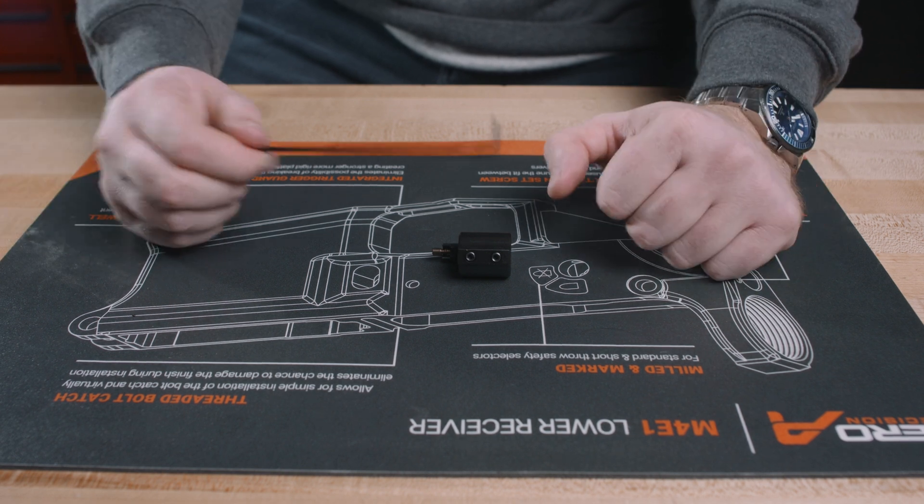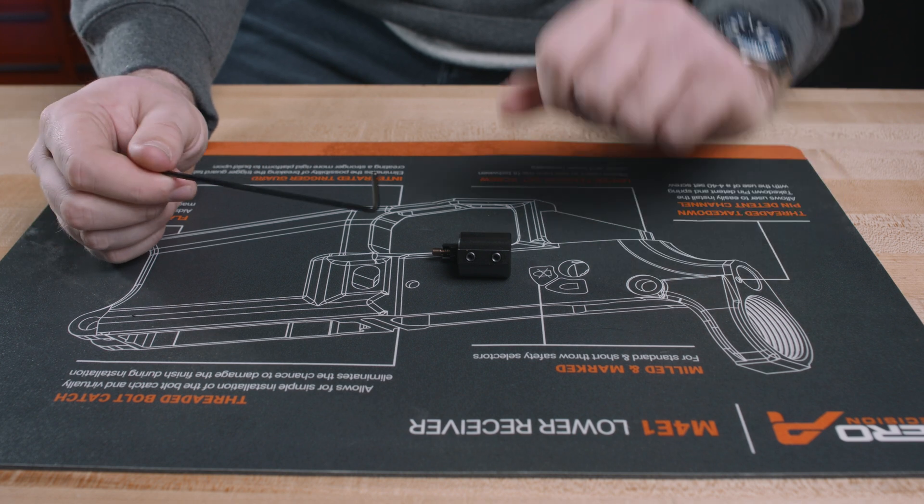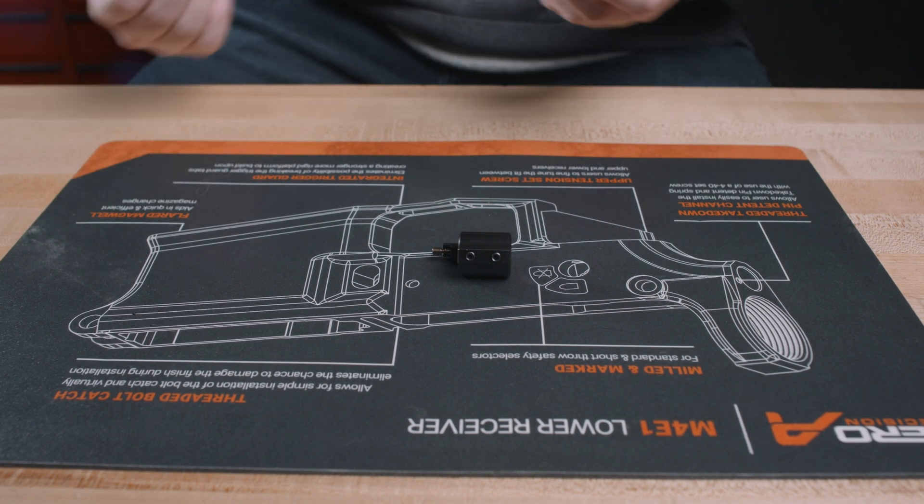Before we get started, we're going to go into the anatomy of your adjustable gas block. Down on the bottom here, you have your set screws. That's how they attach to the barrel. That's not really any different from any other low-profile gas block that you may use.